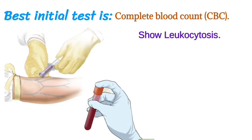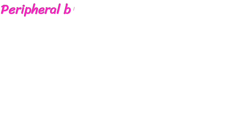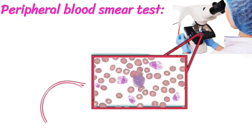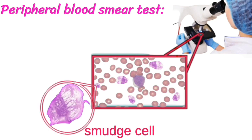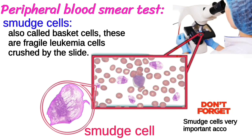For diagnosis of CLL, the best initial test is a complete blood count, which shows leukocytosis. Remember, 95% of CLL originates from B lymphocytes, so blood smear shows B cells greater than 5,000. On peripheral blood smear, you see smudge cells, also called basket cells. These are fragile leukemia cells crushed by the slide. Smudge cells are very important from an exam point of view.